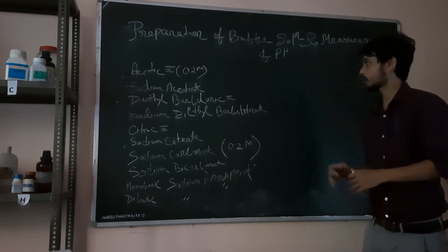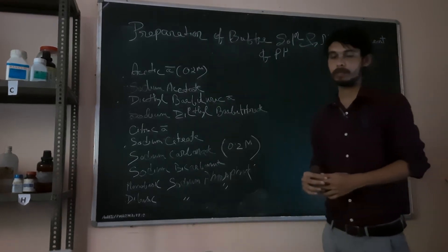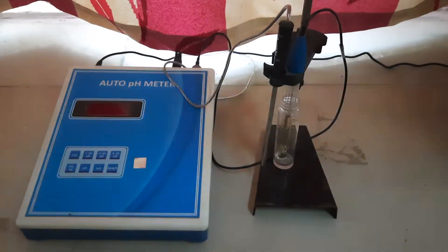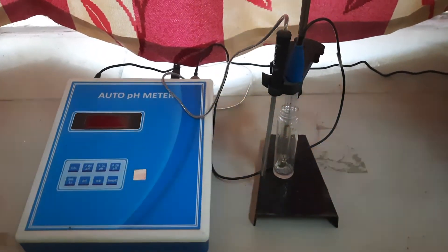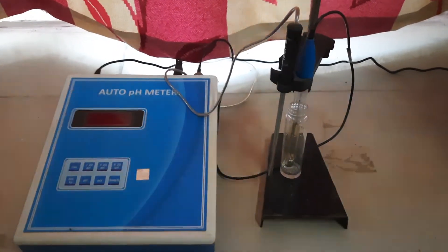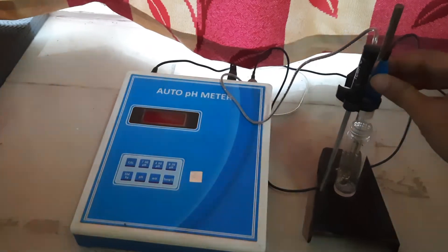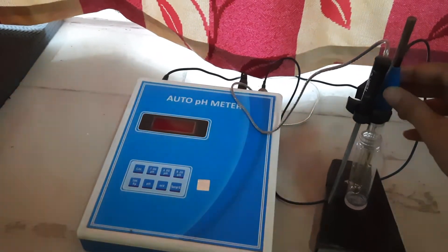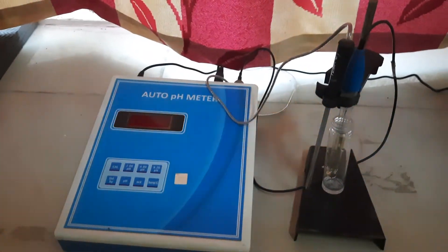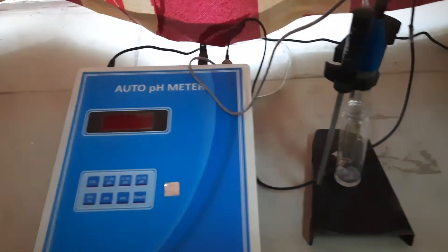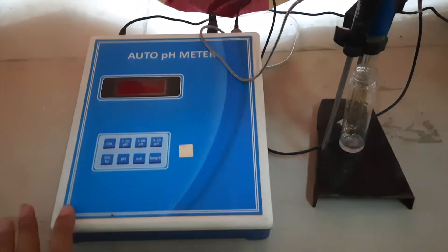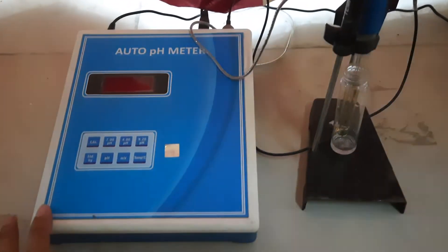Here you can see the pH meter we have. This is an auto pH meter and this is the glass electrode. The glass electrode is connected to this voltmeter via wire. We also have a thermometer so we can determine the temperature of the solution.